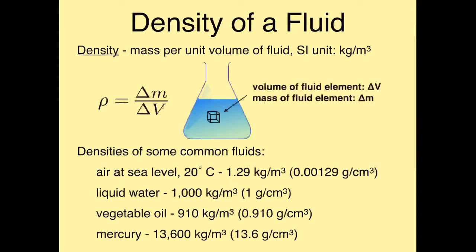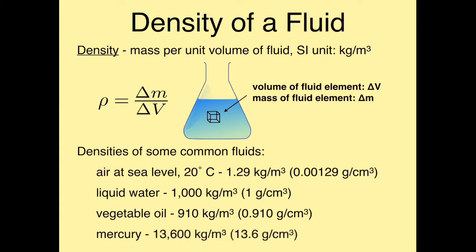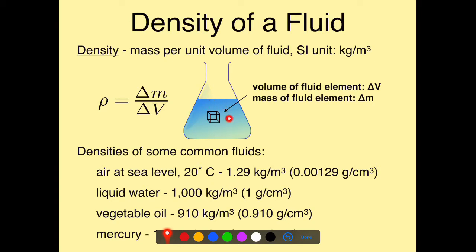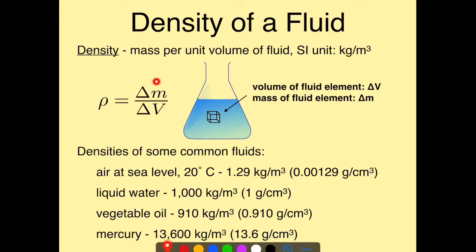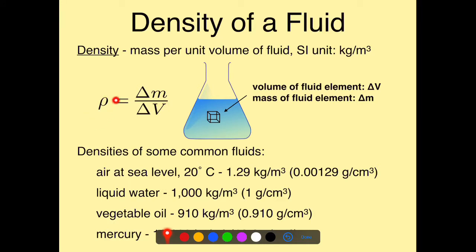Now let's get into some physical characteristics of a fluid. The first one is density. Density is simply the mass per unit volume of a fluid. If we pick out a little volume element ΔV from a container of fluid, there will be a certain amount of mass ΔM contained within that volume. The density is simply ΔM over ΔV, and we use the Greek letter rho (ρ) to denote density.